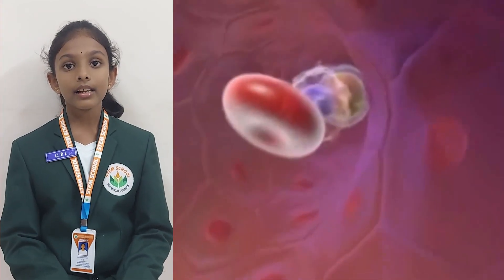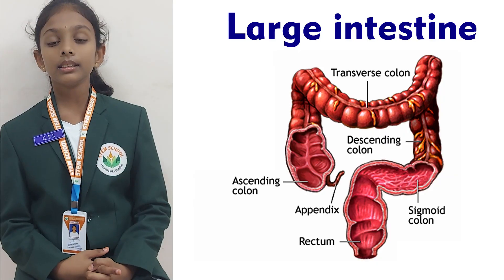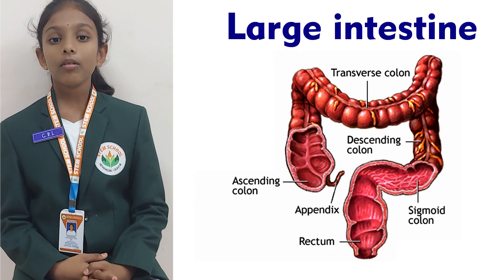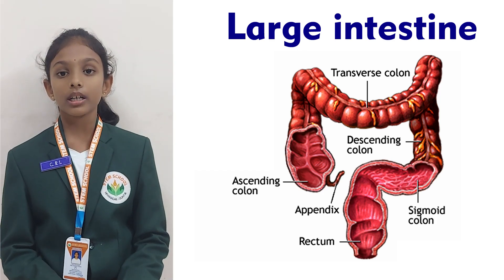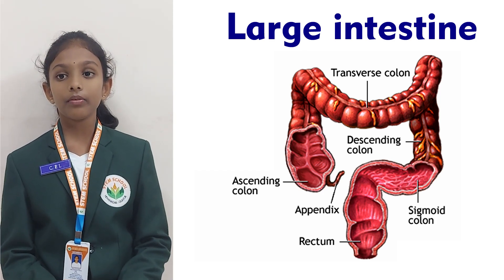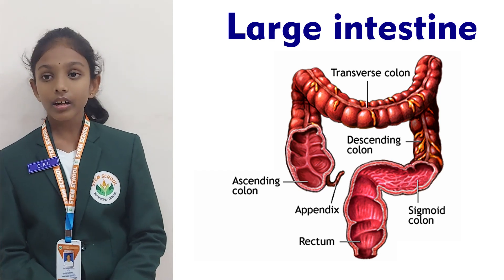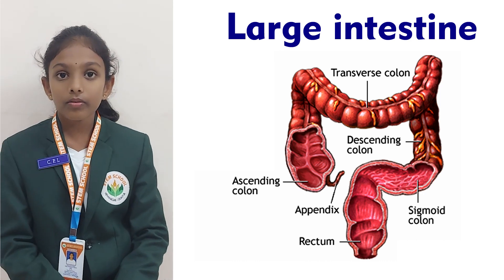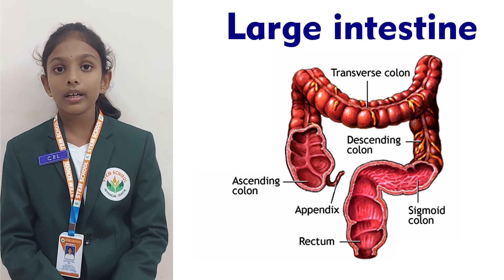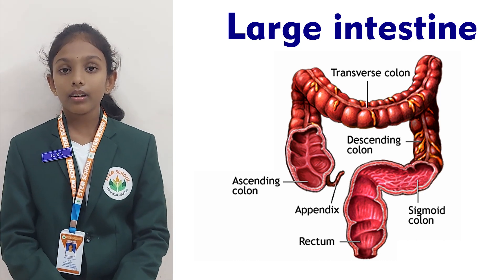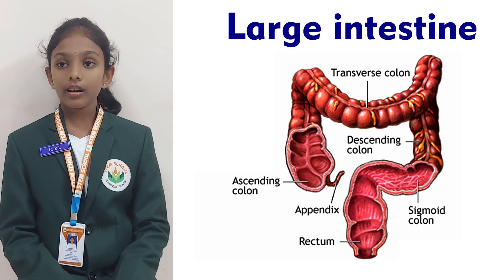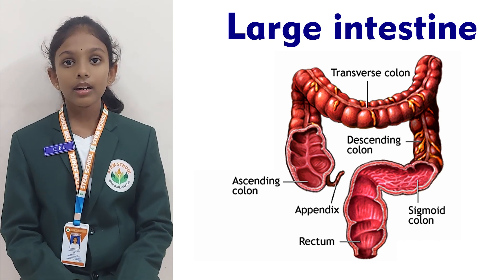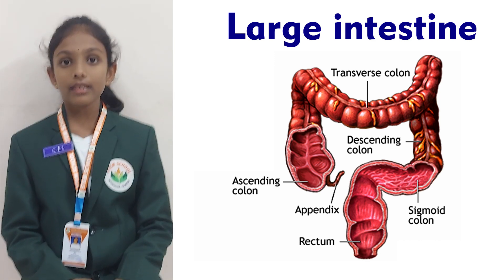The large intestine. The walls of the large intestine absorb extra water from the undigested food, and it is removed from the body through the kidneys and passed out from the body as urine.